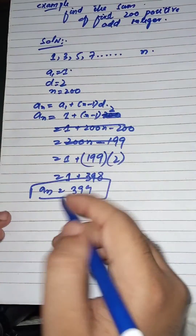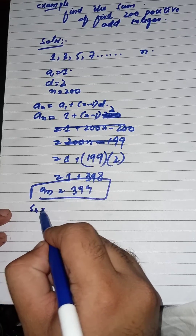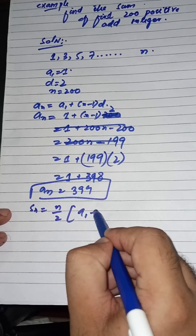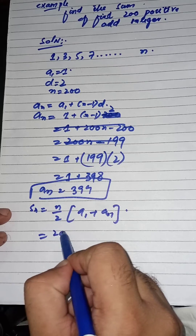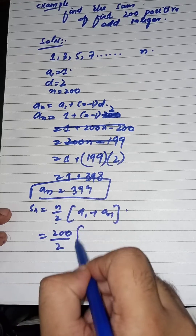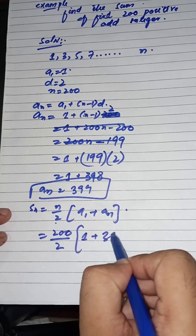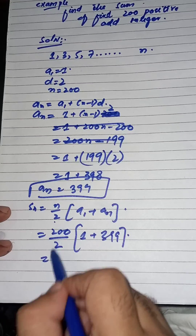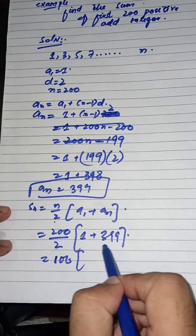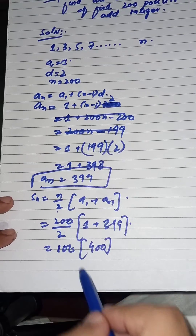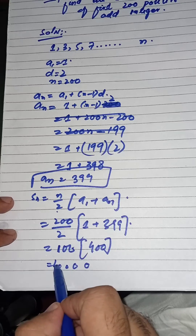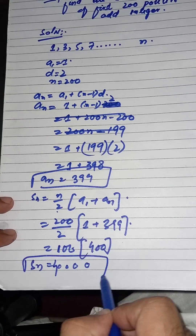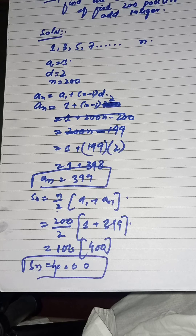Now I have to find the sum. Sn is equal to n divided by 2 times (a1 plus an). So n is 200, a1 is 1, and an is 399. That gives us 200 divided by 2 is 100, and 1 plus 399 is 400. So 100 multiplied by 400 equals 40,000. The sum of the first 200 positive odd integers is 40,000.